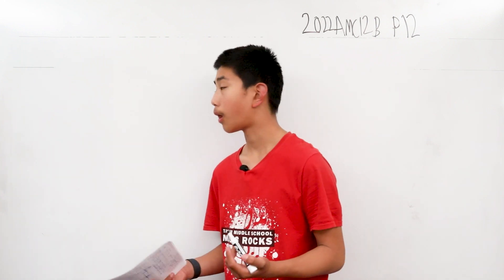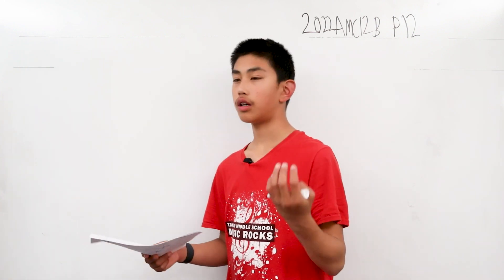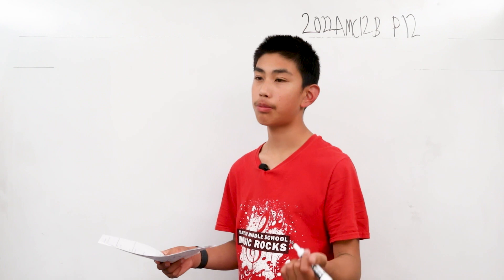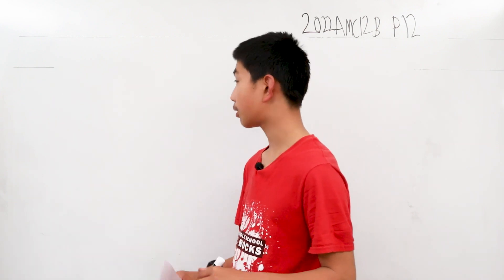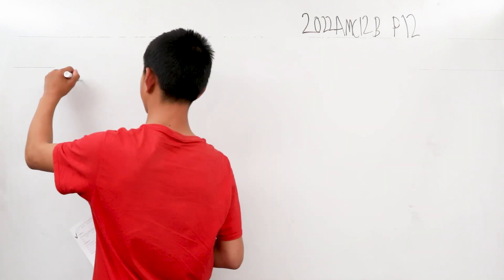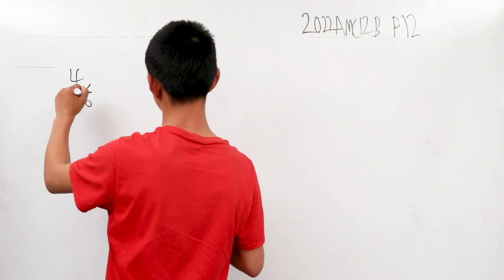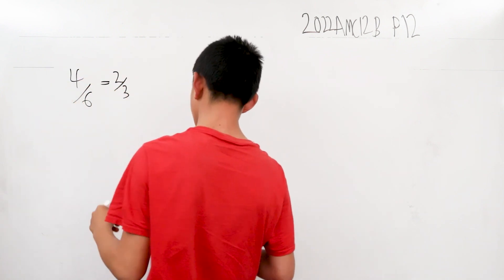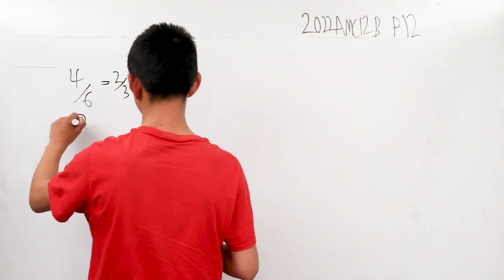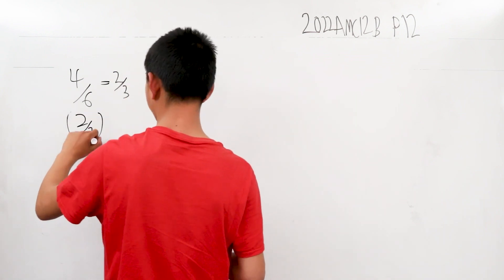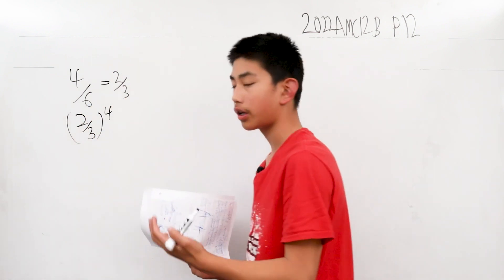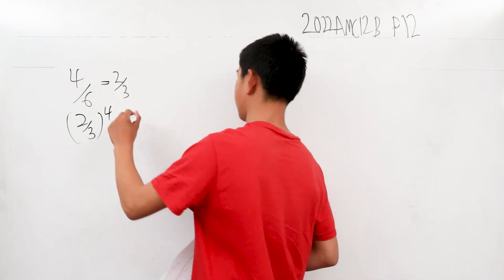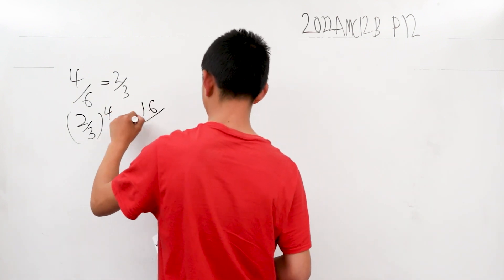If one of the dice were to have the probability to roll a number from one to four, that's four of the values divided by the six total values, or two-thirds. Our probability is going to be two-thirds to the fourth power because we want to consider all four of the dice. This is 16 over 81.